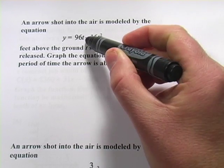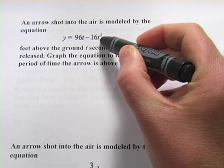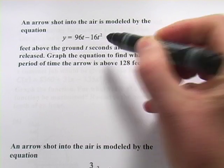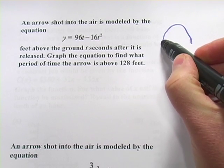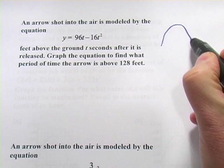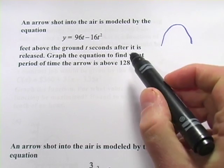Before we go any further, you should realize that if there's a negative sign in front of the coefficient for the squared term, you're going to have a downward opening parabola. And that makes sense because when you shoot an arrow in the air, it goes up and then it comes back down.